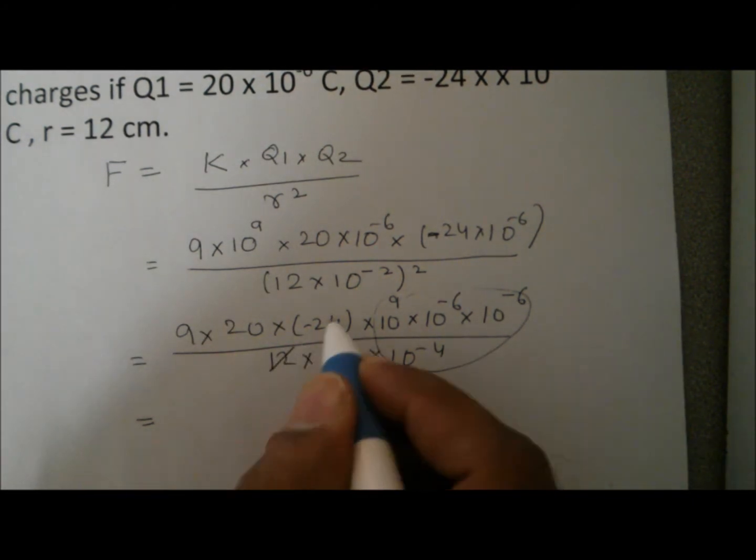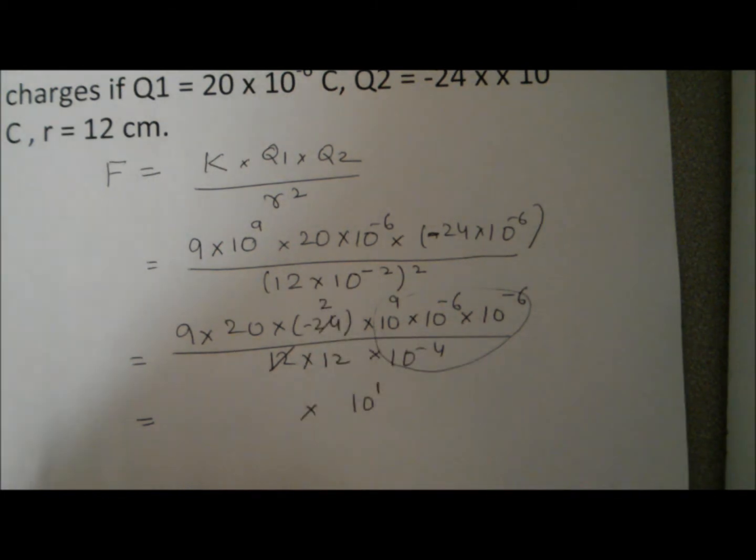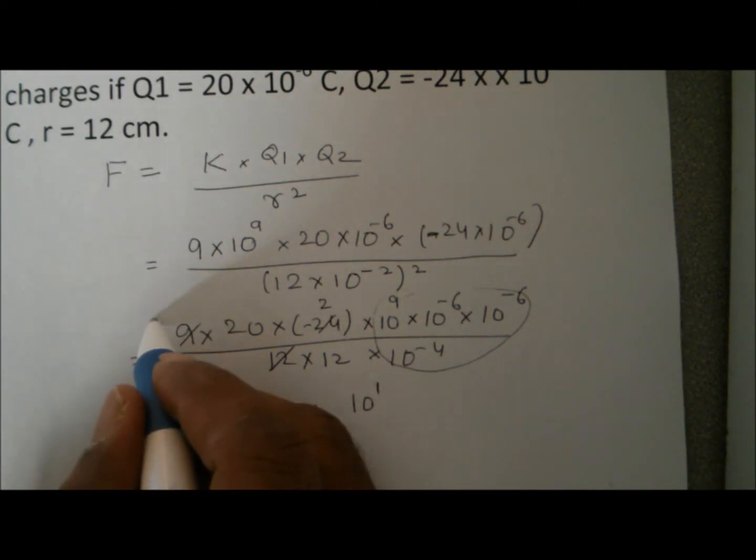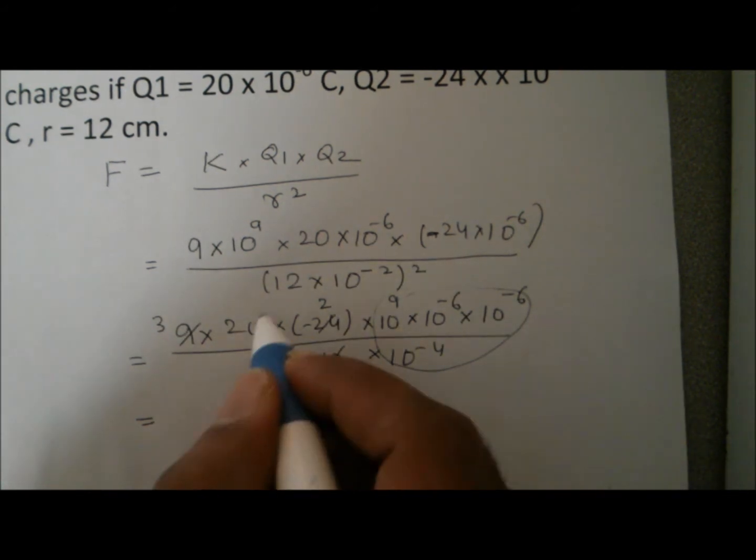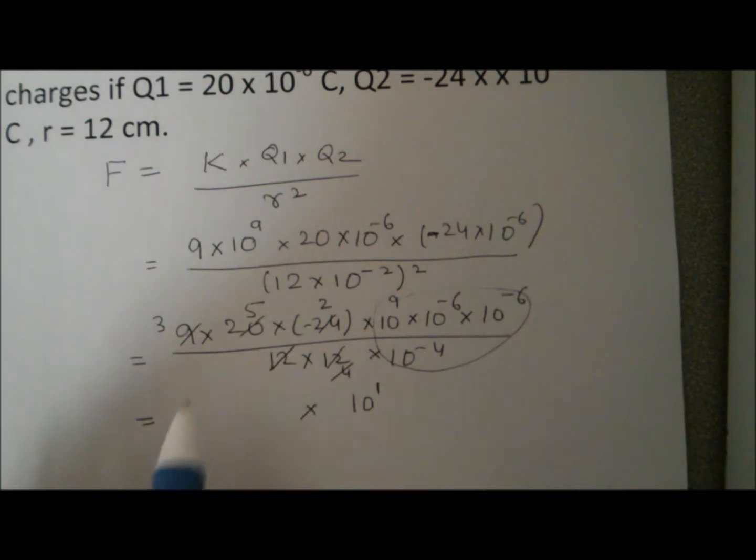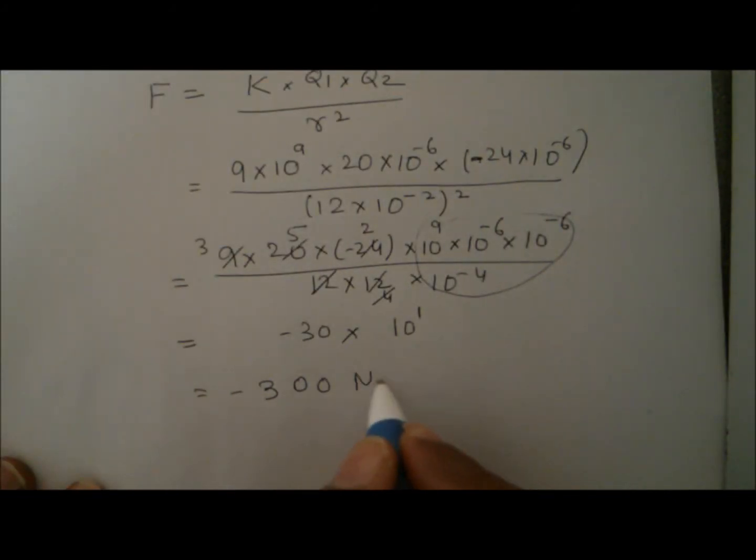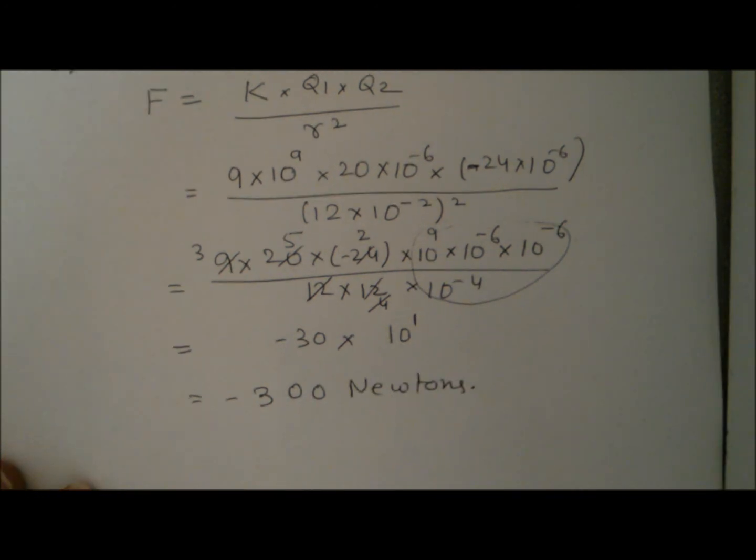To simplify this one, it's 12 into 2 minus 24, 3 into 3 is 9 and 3 into 4 is 4 and 4 into 5 is 20. Finally, we got 3 into 5 is 15, into 2 is 30 and this minus sign, so it's minus 30 that equals minus 300 Newtons. So that's the answer. I hope that helps you. Thank you. Bye.